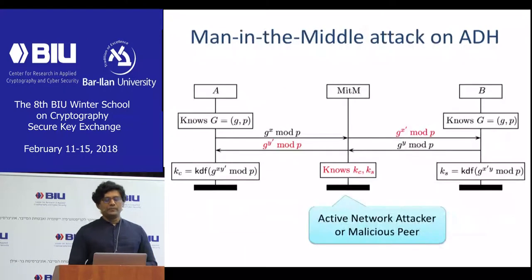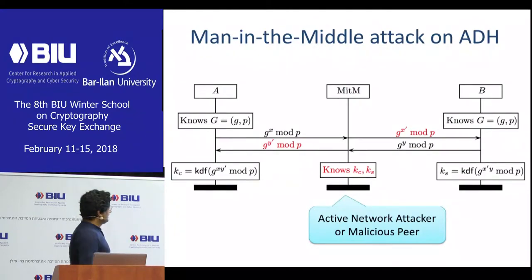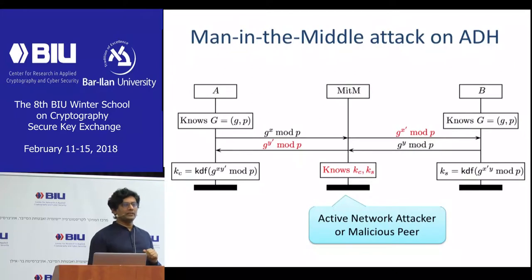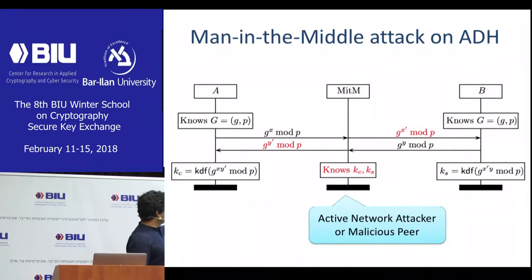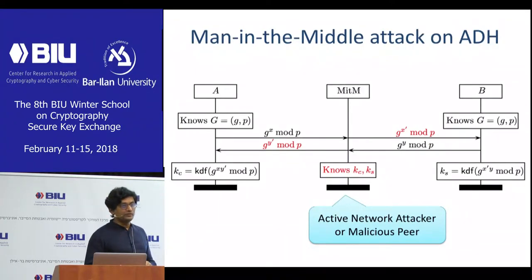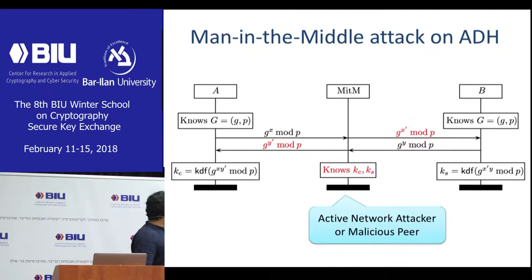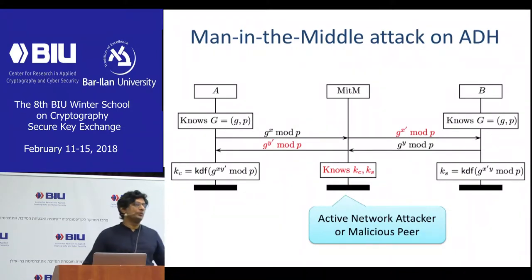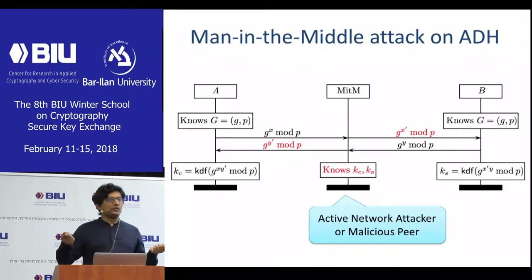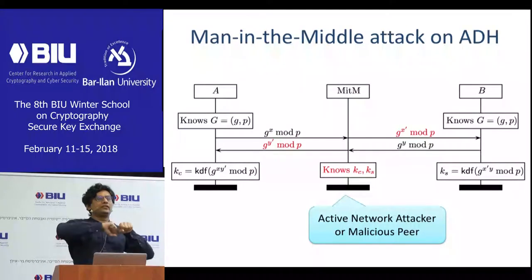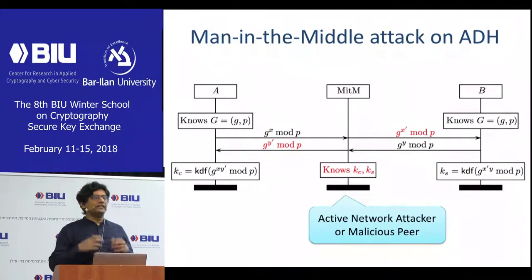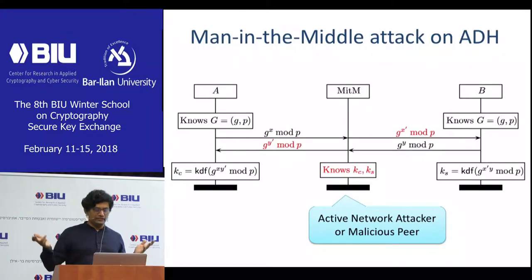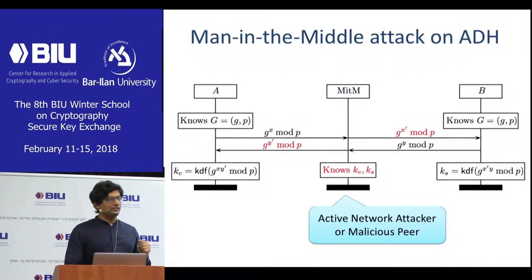The man-in-the-middle attack: the network attacker takes G^X going from A to B, changes it to G^X' where the attacker knows X'; when G^Y comes back it changes it to G^Y' where the attacker knows Y'. Now there's a key on the left, G^XY', and on the right G^X'Y. The attacker knows both keys because it chose them in both directions. The network attacker can be a complete proxy between client and server. The reason this happens is of course there's no authentication, and there are well-known ways of adding authentication to this protocol.